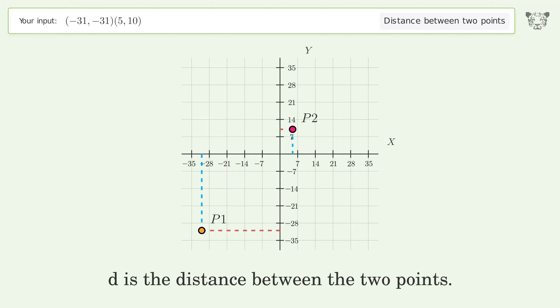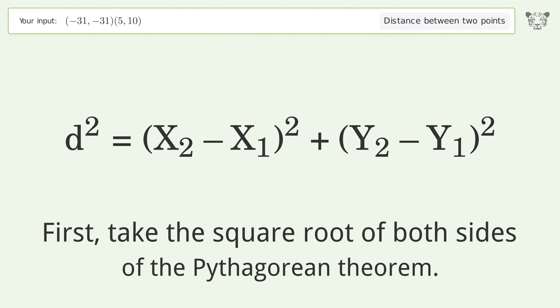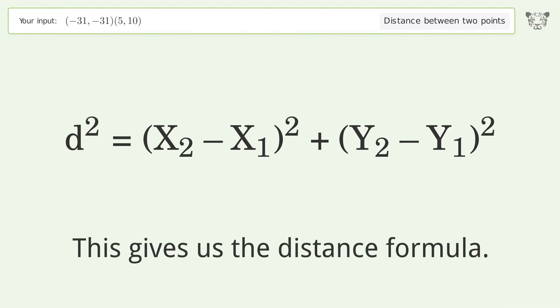d is the distance between the two points. First, take the square root of both sides of the Pythagorean theorem. This gives us the distance formula.